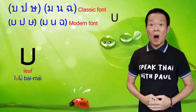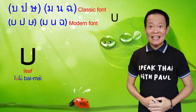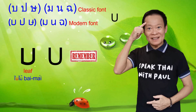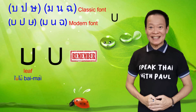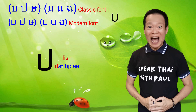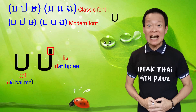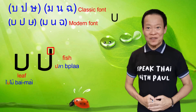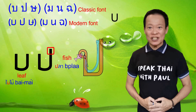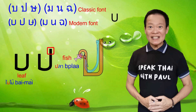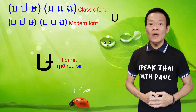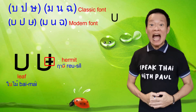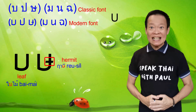The first consonant, Bo Mai Mai, is the easiest to identify as it has the basic U shape. So the next time you see a U shape, remember it is the consonant Bo Mai Mai. The next consonant, Bo Pla, looks like Bo Mai Mai except for a longer tail on the right. This consonant is easy to identify as it looks like a fishing hook with a long handle used to catch fish. The next consonant, So Reusi, also looks like Bo Mai Mai except that the curve on the right in classic fonts is simplified into a horizontal line in certain modern fonts.